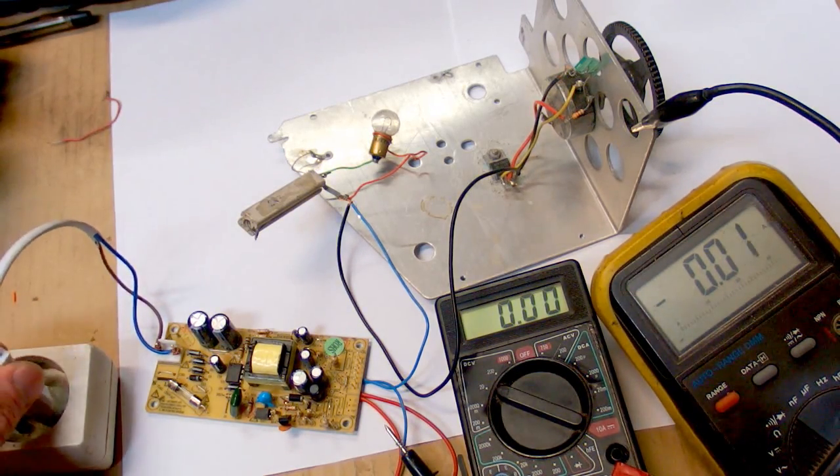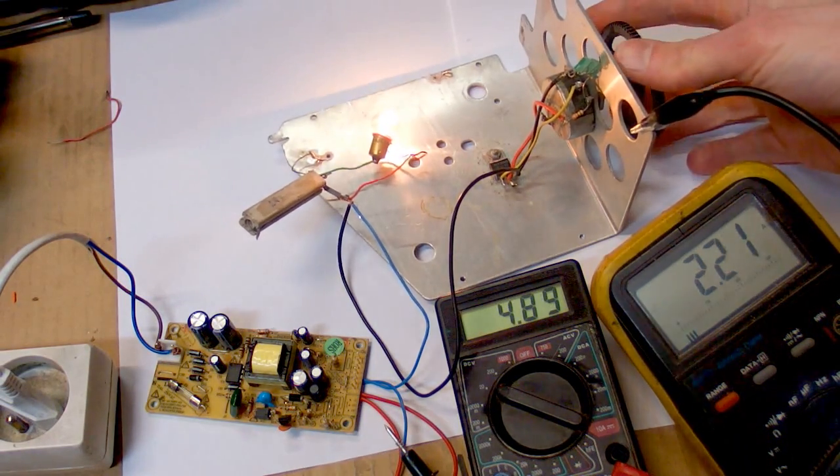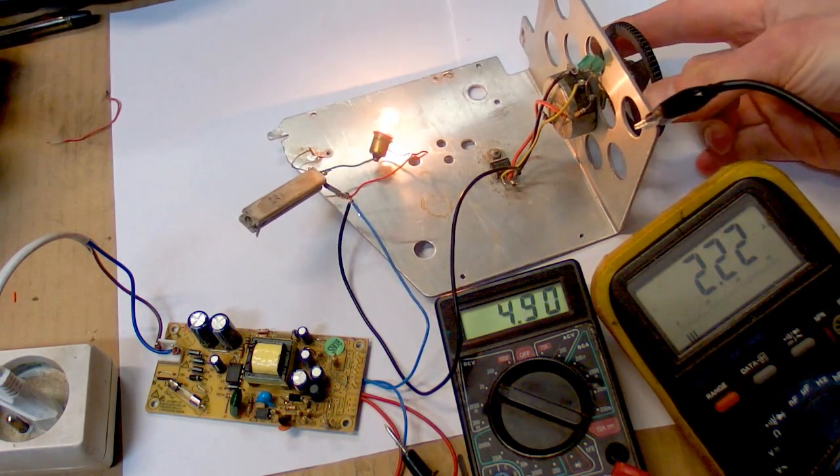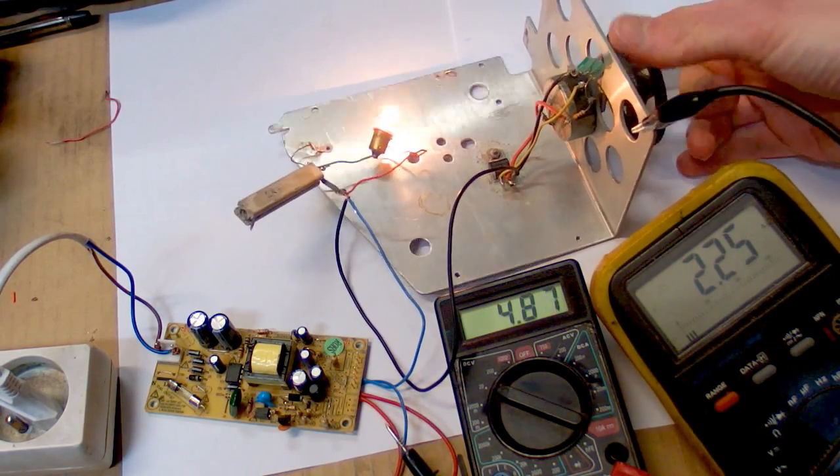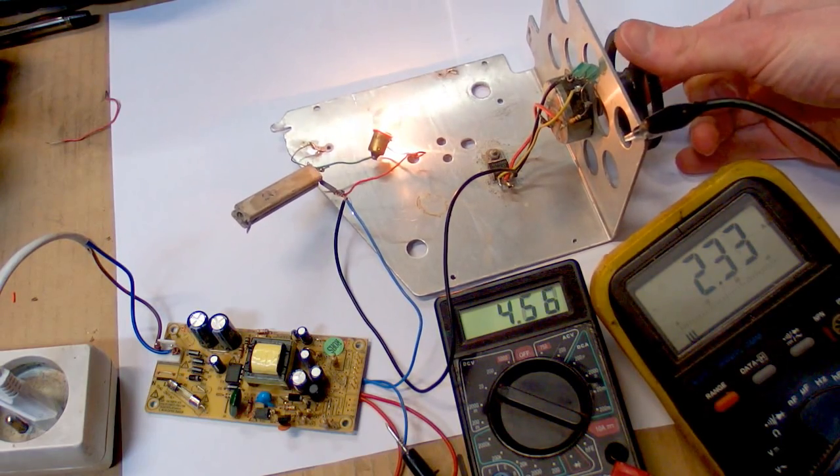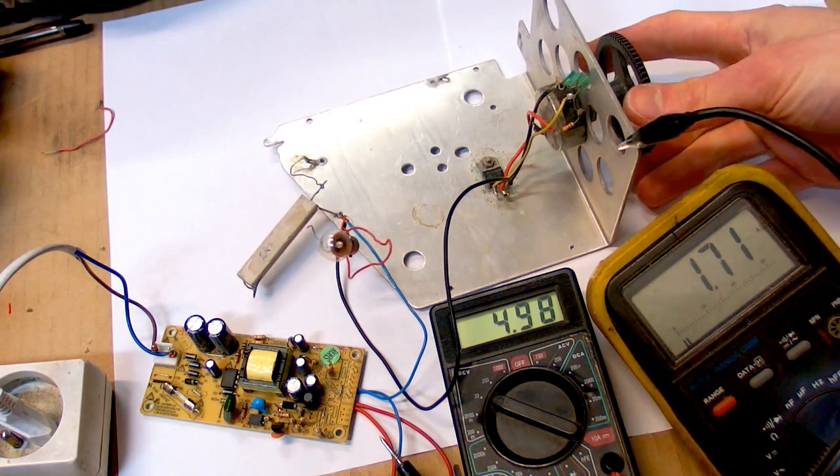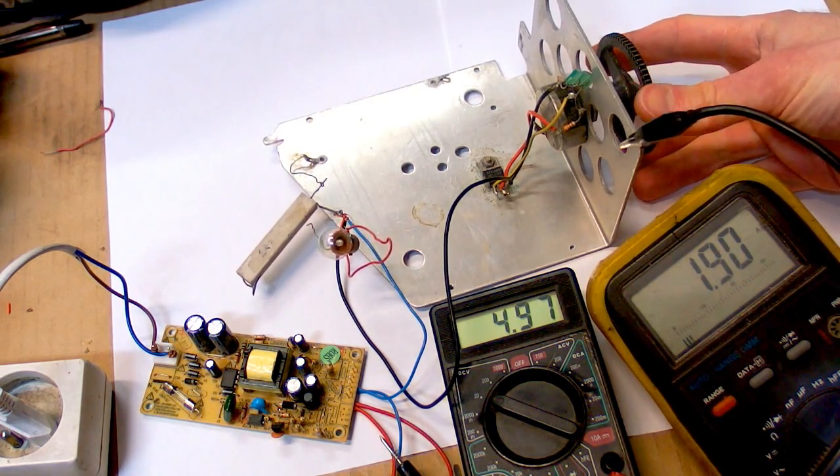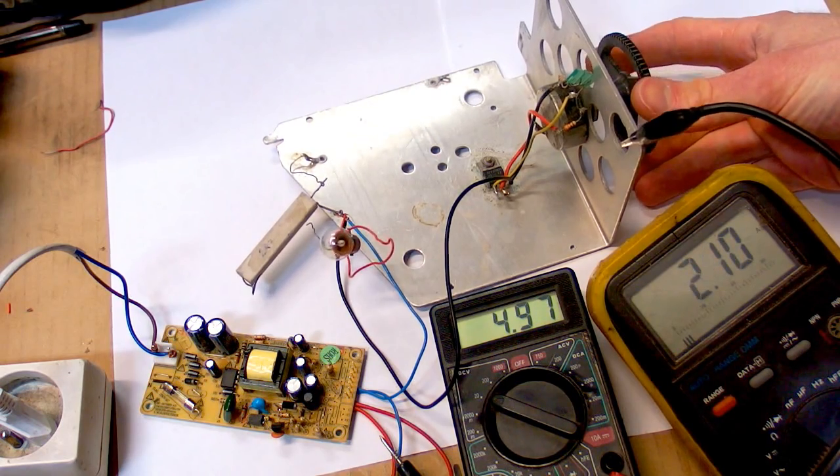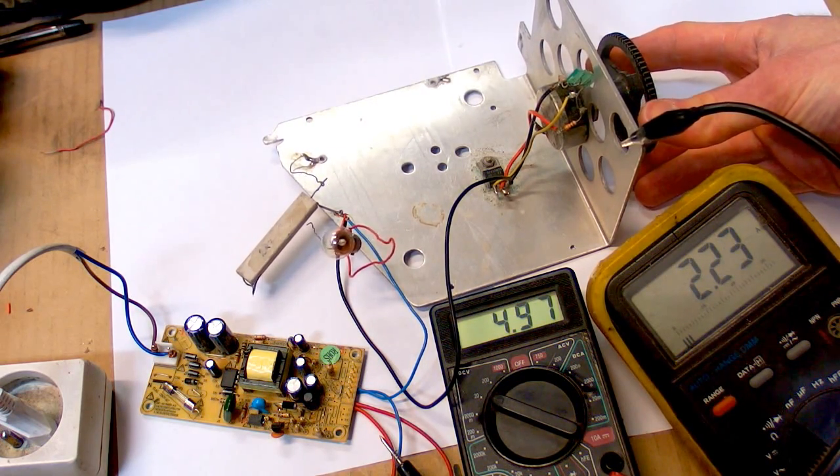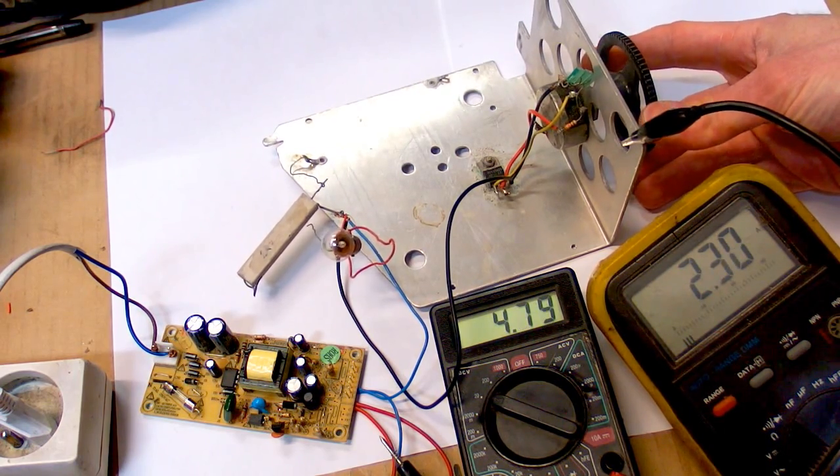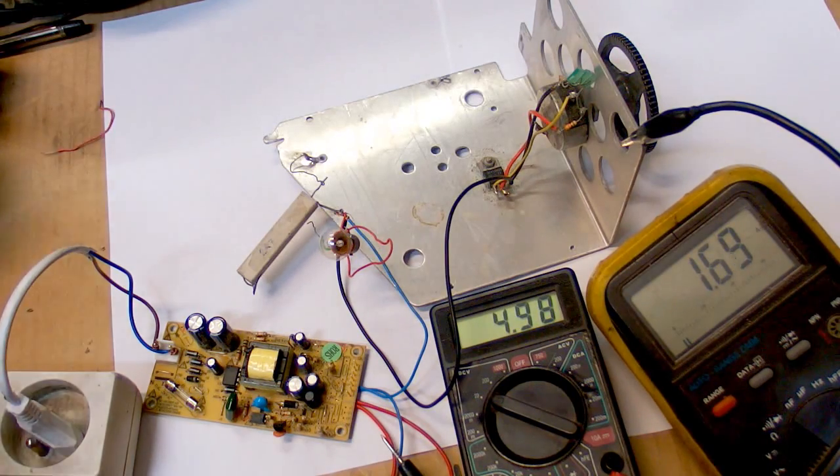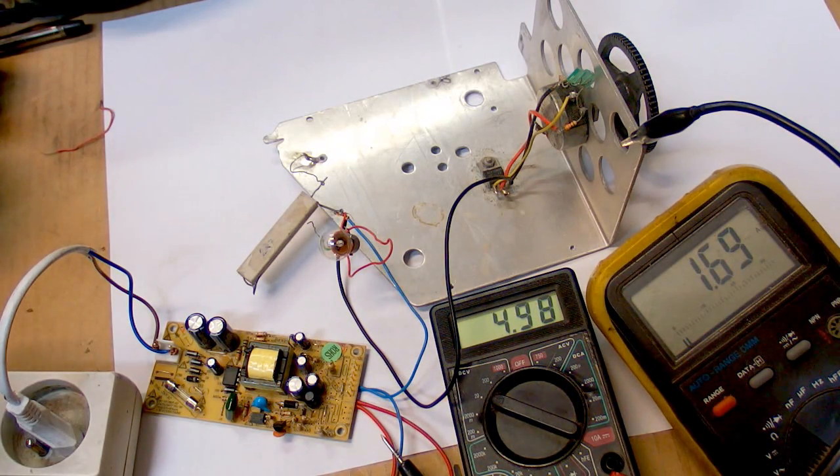Now let's try to load it using my variable test load. And the voltage doesn't drop much until about 2.2 amps, 2.3, and it drops significantly now. As you can see, 1.7 amps, the voltage is still okay, 1.8, 1.9, 2 amps, 2.1, 2.2, 2.3, and now it's dropping. So the actual design current can be somewhere between 1 amp and 2 amps.